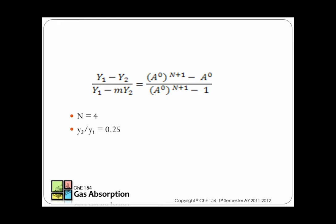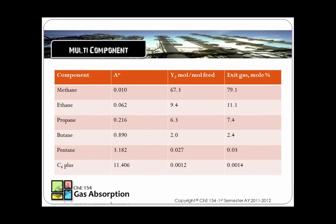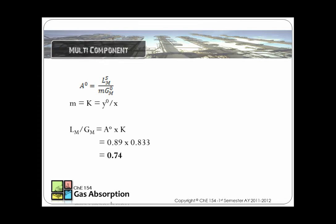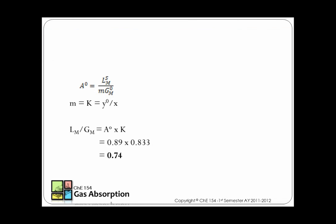After computing for the absorption factors, Y2 or the composition of the exit gas can be computed using the Kramsler formula. The answers are summarized in the table. To compute for the liquid-to-gas ratio, the absorption factor for butane will be multiplied by its liquid vapor equilibrium ratio. This formula was derived from the formula of the stripping factor shown under the Kramsler formula.